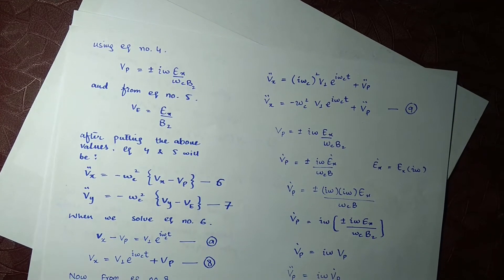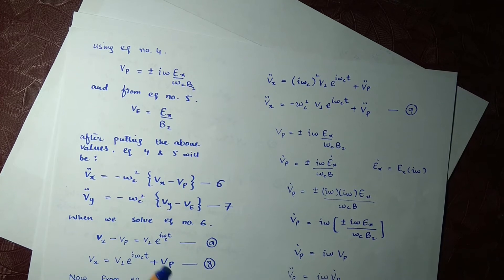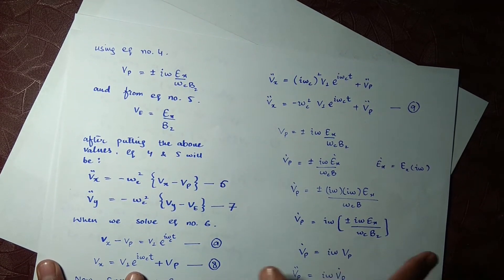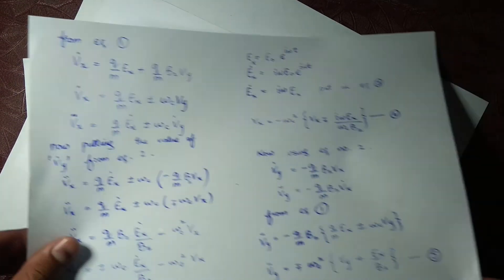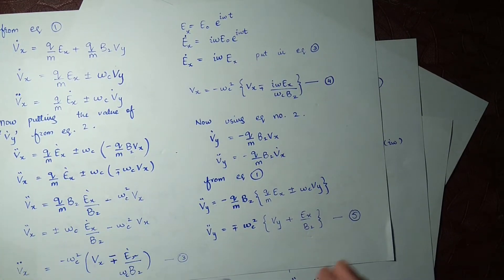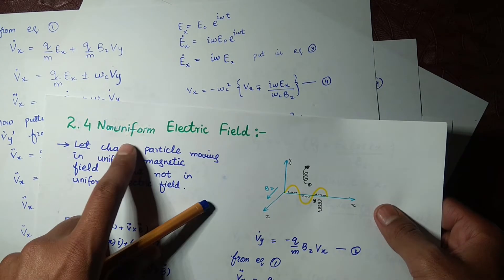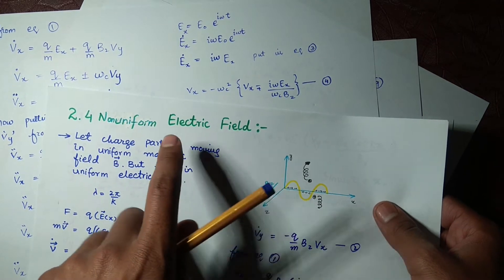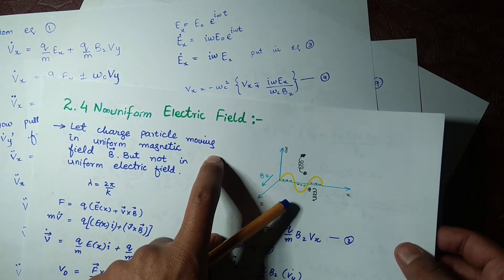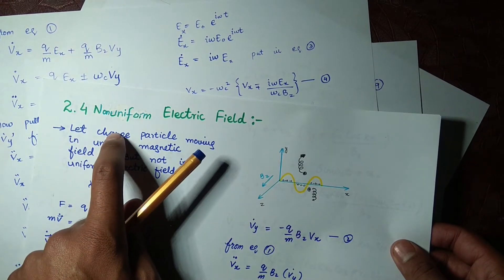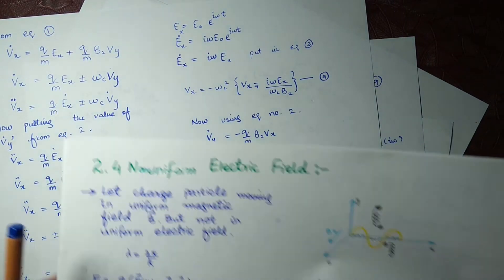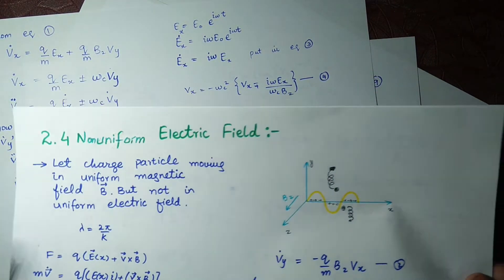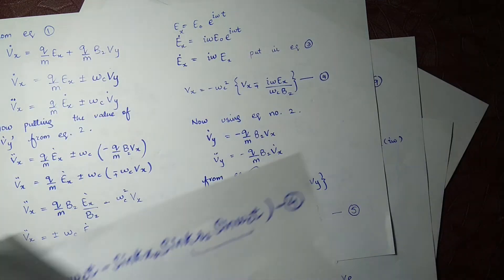Assalamu alaikum dear students. In the previous lecture we derived equation number five. That lecture covered the non-uniform electric field — a varying electric field with respect to position, which was section 2.4. Now in section 2.5 we are talking about a time-varying electric field, and the equation we derived at the end was our starting point today.